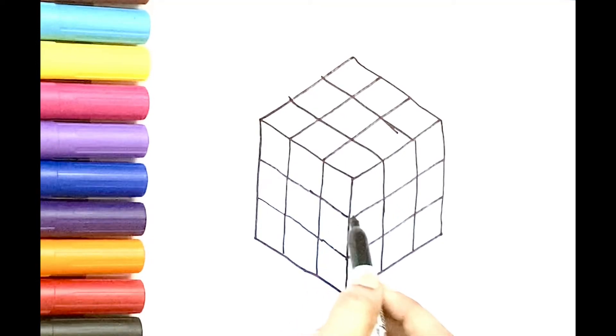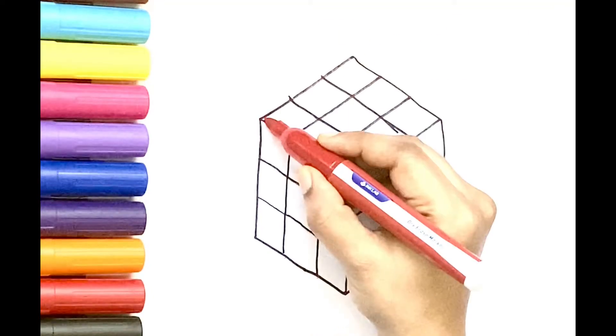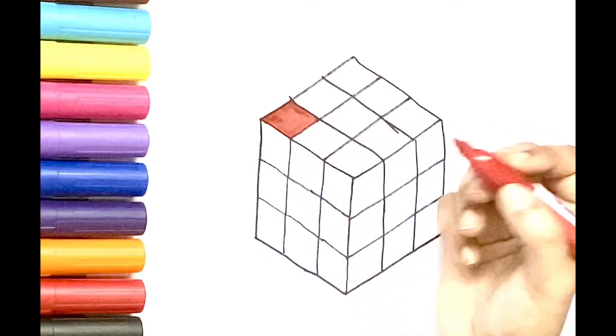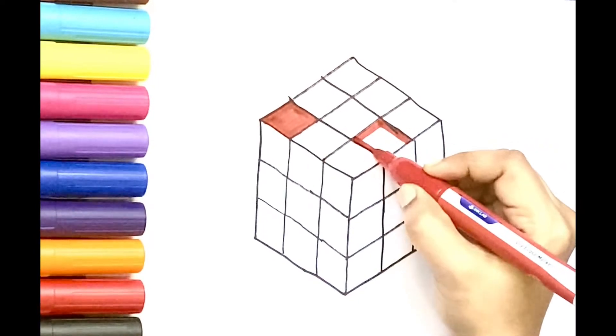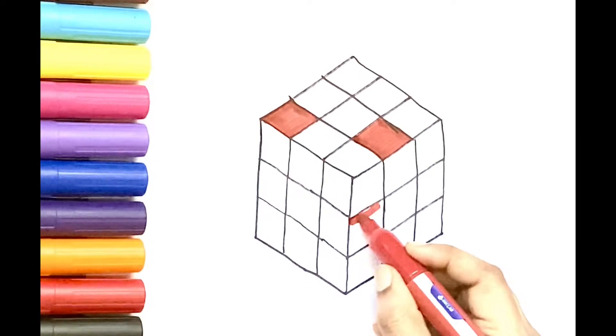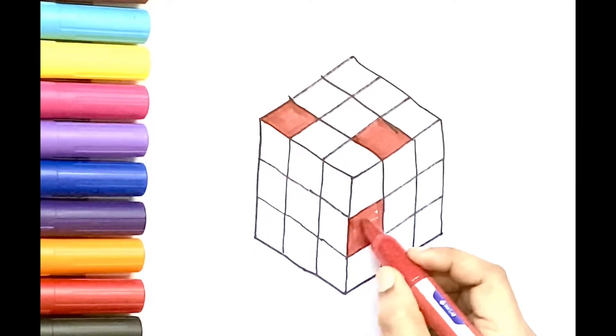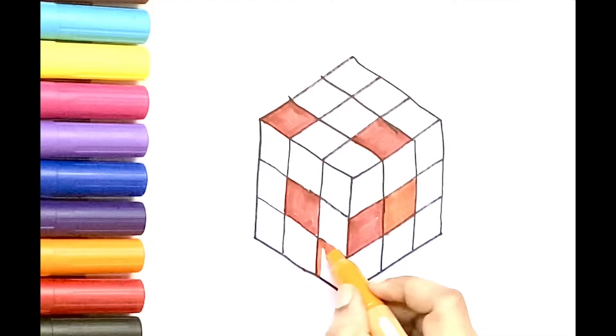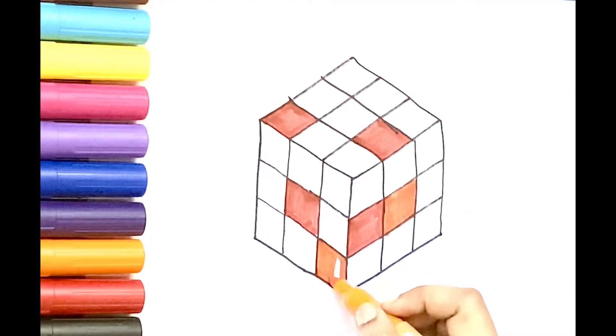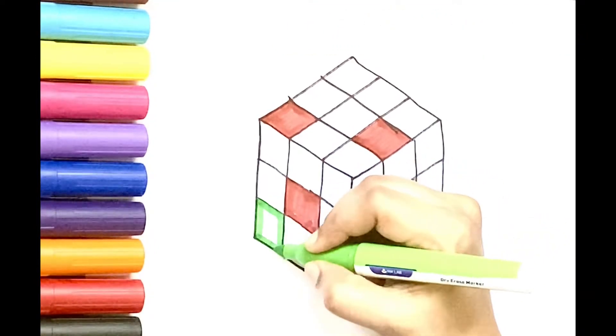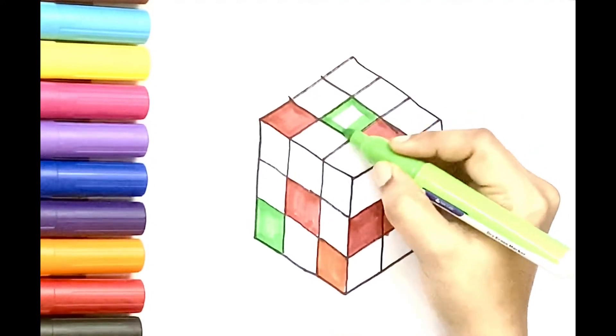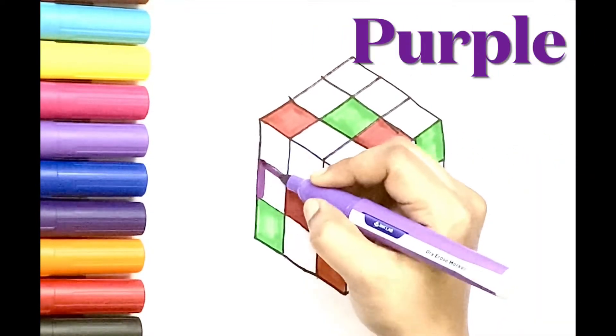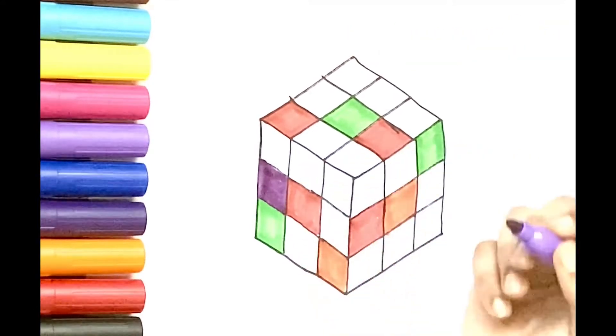Let's start coloring. A cube has six sides so we need six colors for six sides: red, orange, green, purple, blue.